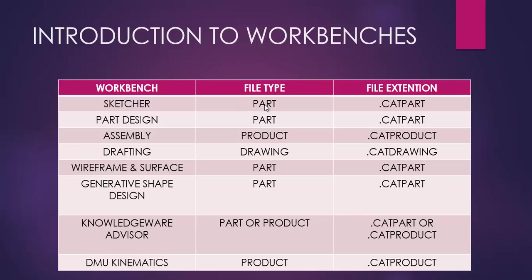Now for each and every file type we are having several workbenches. You see in this list we are having sketcher, part design, wireframe and surface design, and generative shape design under part file type. And we are having assembly design and DMU kinematics under product file. And we are having only one workbench which is drafting under drawing file type. And we are having knowledge ware which can be applied for both part and product.